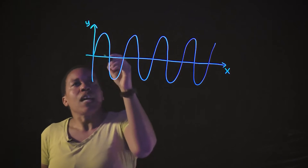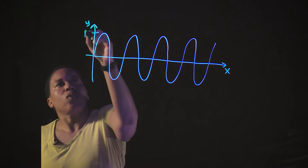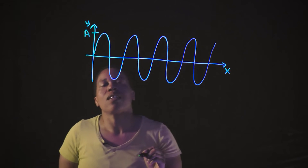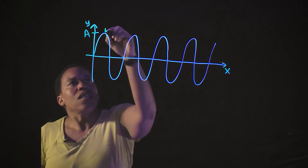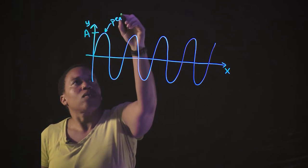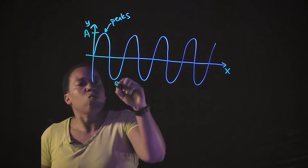And we can label the amplitude, which is the height, and we can see that we have some peaks, and some troughs.